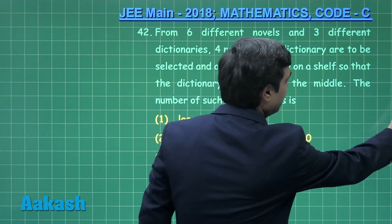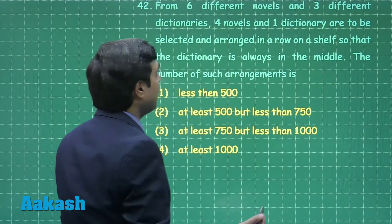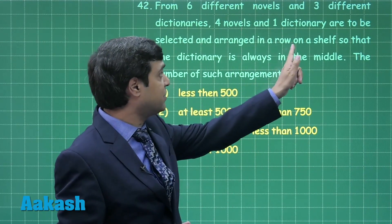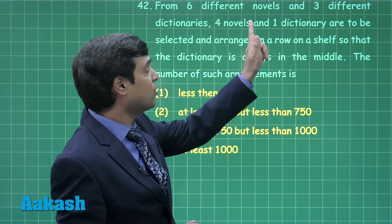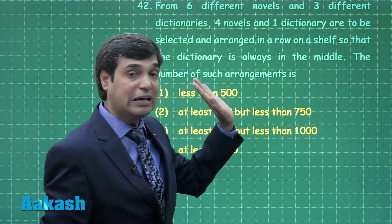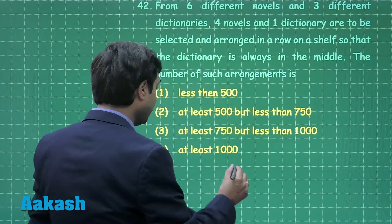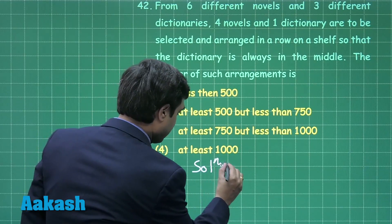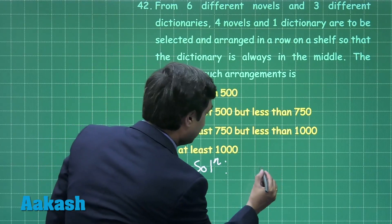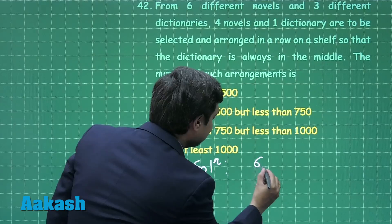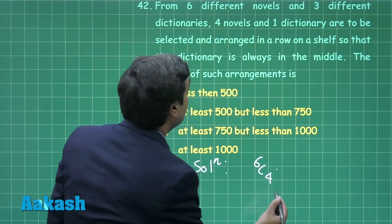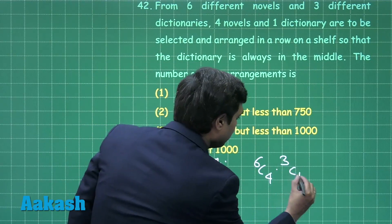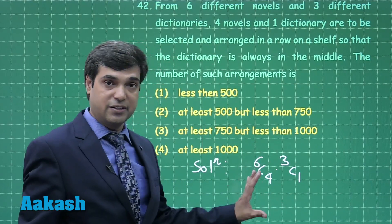We can start this question: since we have to select 4 novels and 1 dictionary out of 6 novels and 3 dictionaries, the number of selections comes as 6C4 multiplied by 3C1. These are the number of selections.